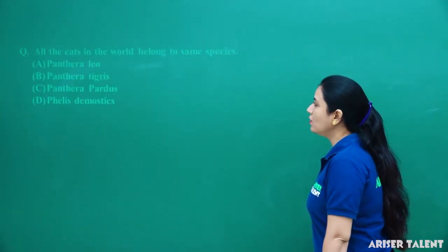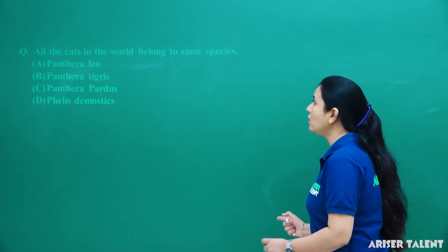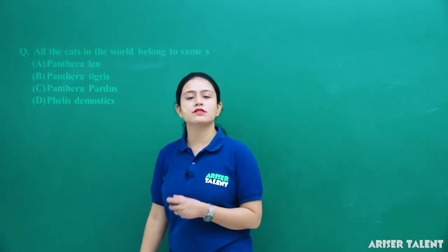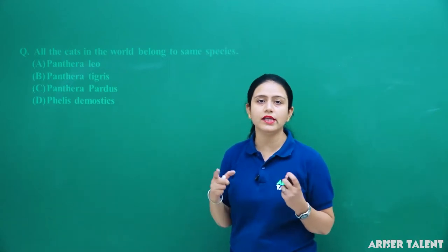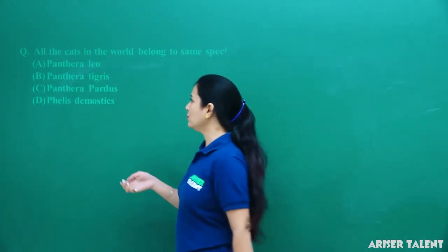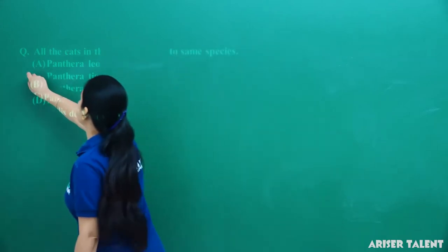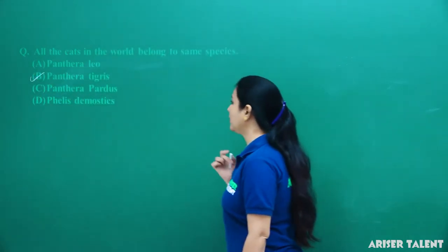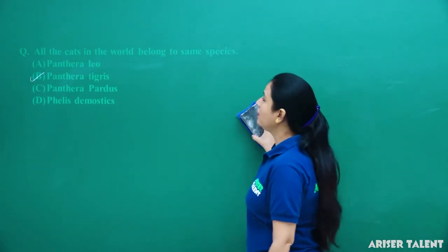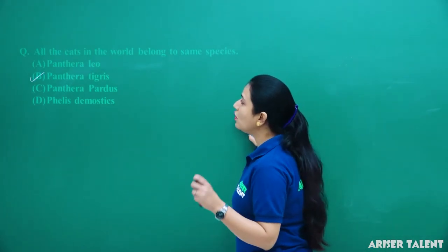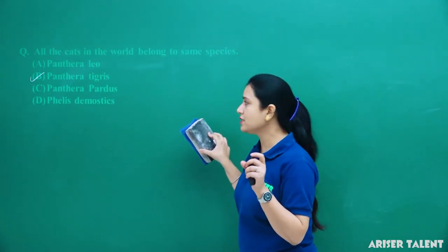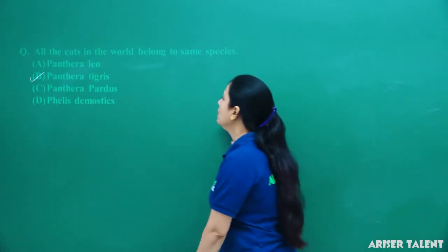Next, all the cats in the world belong to the same species. As we study in the chapter, all cats are grouped under Panthera tigris. It is given in the book also. So the answer is Panthera tigris — all the cats in the world belong to the same species, Panthera tigris.